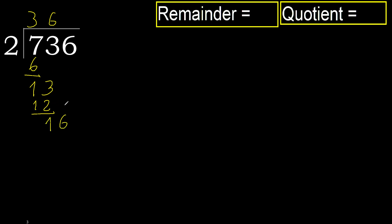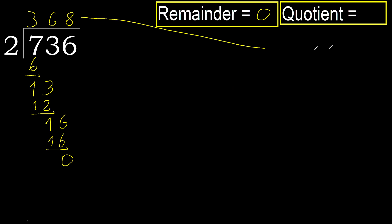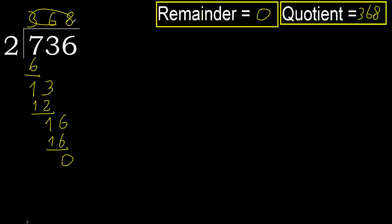Next, 16: 2 multiplied by 8 is 16, which is not greater. Subtract and there is no remainder, so we finish. 736 divided by 2 is 368.